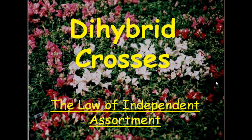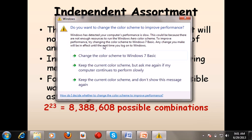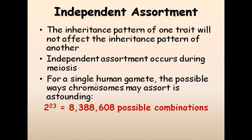The Law of Independent Assortment was suggested by Gregor Johann Mendel. Independent assortment means the inheritance pattern of one trait will not affect the inheritance pattern of another trait. For example, traits are the phenotypic expression of a particular gene. If we talk about flower color — white or pink — and flower smell — sweet or no smell — these are two different traits.